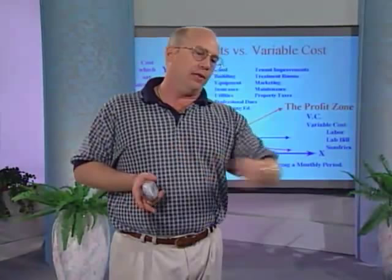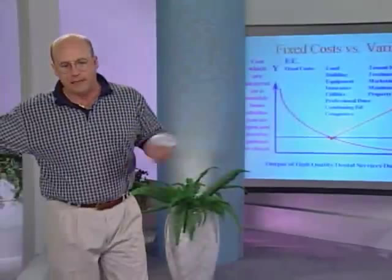Let's look back at the last three months: did you have the same number of hygienists? Of course. Did you work the same number of days last quarter? Yes — basically, 16 days a month. So if you took your fixed costs — land, building, equipment, insurance, utilities, professional dues, continuing ed, computers, tenant improvements, treatment rooms, marketing, maintenance, property taxes — and divided that by 16 days, that's your fixed cost per day.